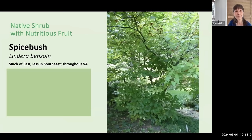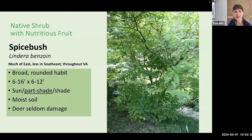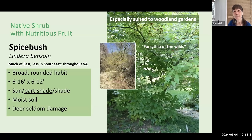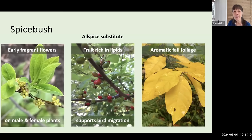Another native shrub with nutritious fruit is Spicebush, Lindera benzoin. It has a broad, rounded habit growing six to sixteen feet tall, tends to prefer part shade and moist soil, and is especially suited to woodland gardens. It's referred to as the Forsythia of the Wilds with its lovely spring blossoms. It has early fragrant flowers on separate male and female plants — another dioecious species. Its fruit is especially rich in lipids, the fats birds rely on to build up bulk for migration. We can also use the fruit dried as an allspice substitute. In fall you'll see lovely yellow aromatic foliage.